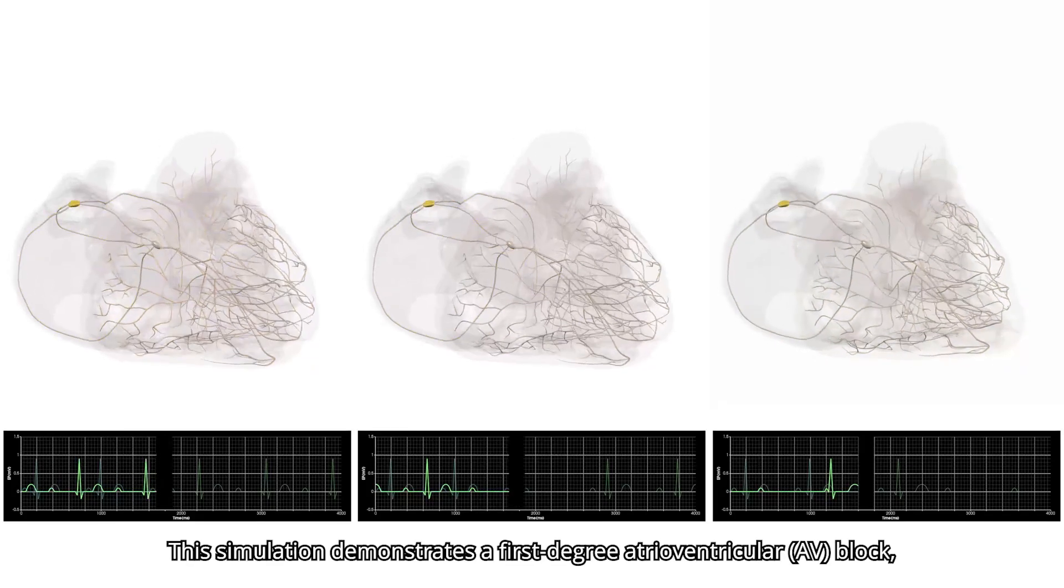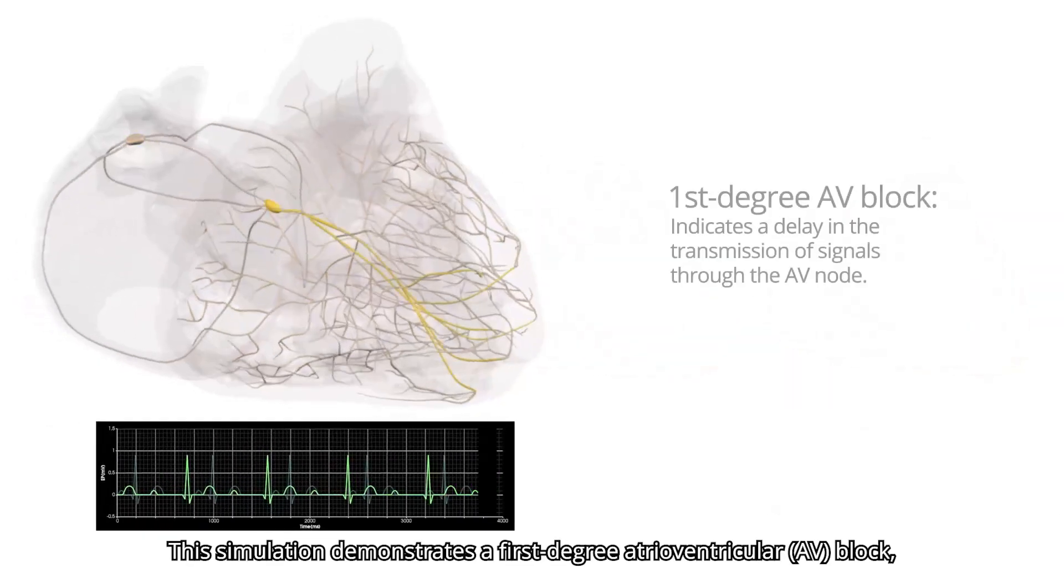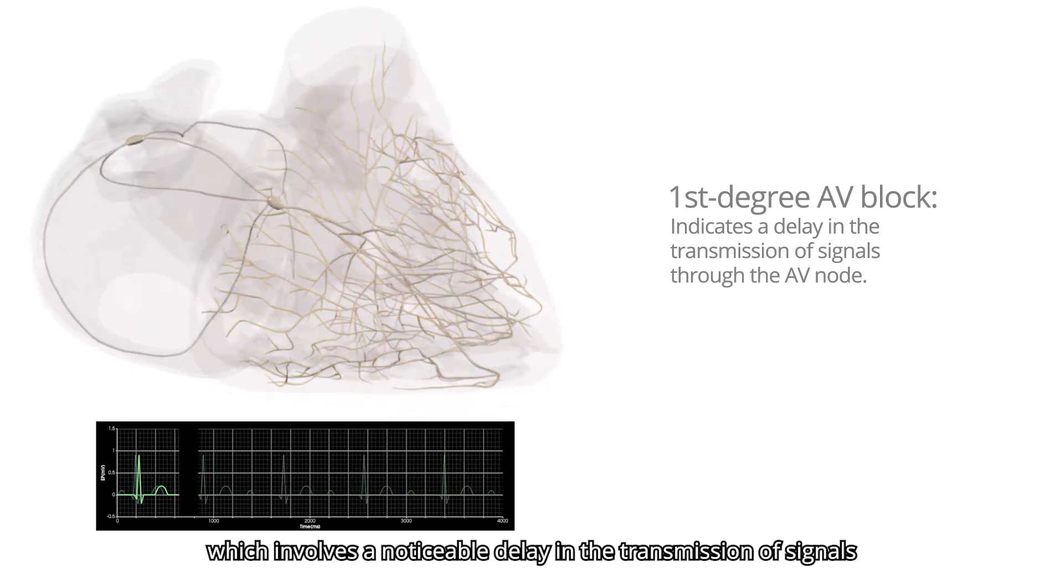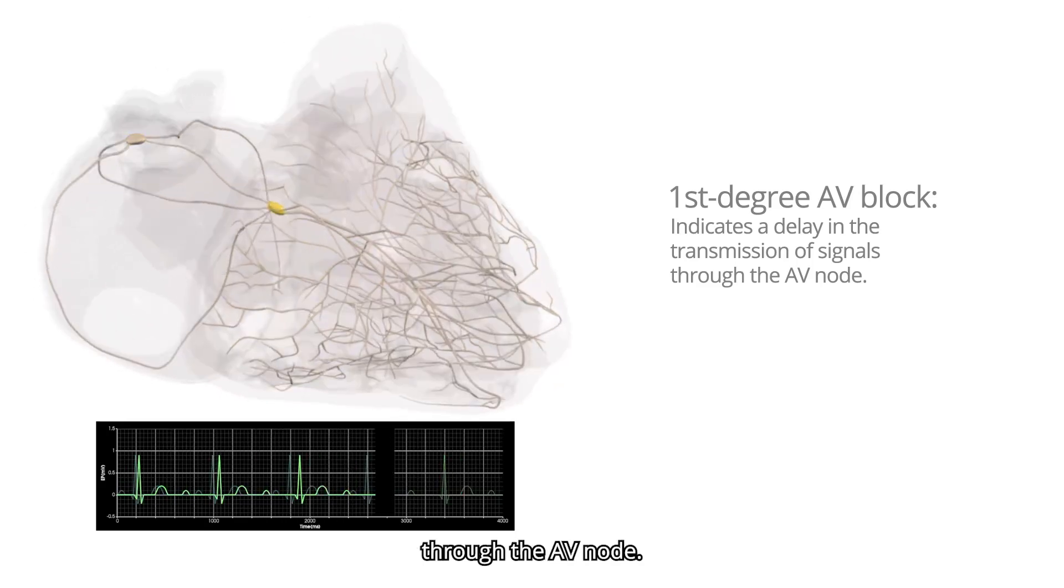This simulation demonstrates a first-degree atrial ventricular AV block, which involves a noticeable delay in the transmission of signals through the AV node.